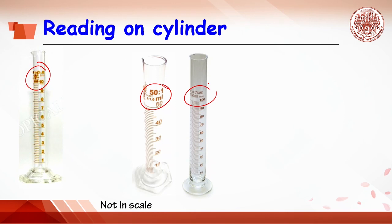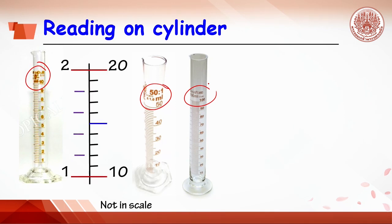The 50 ml and 100 ml cylinders have a similar smallest interval of 1 ml. Certain readings can be 11, 12, 13, or 15, but any reading between the smallest interval marks needs to be estimated. This means that the reading from the cylinder contains one decimal place.